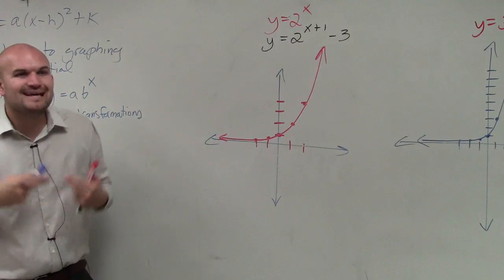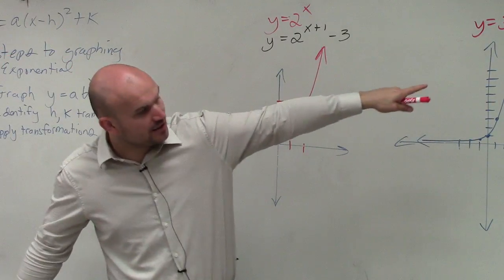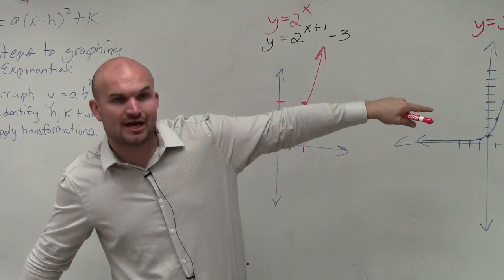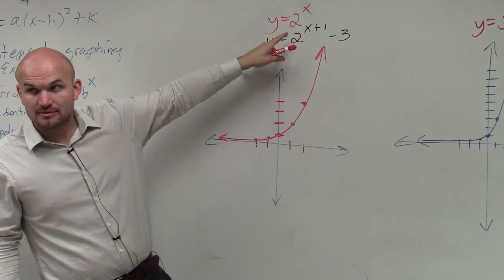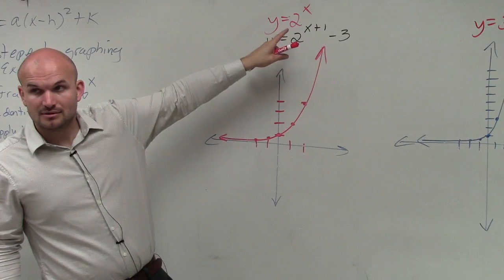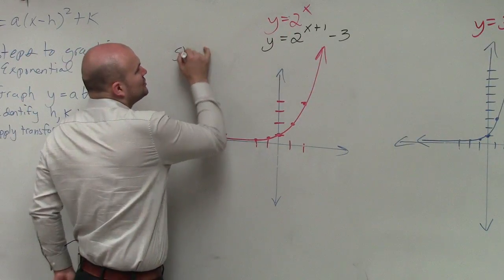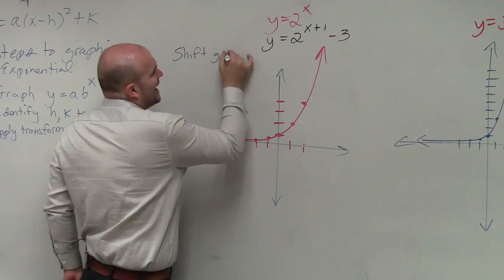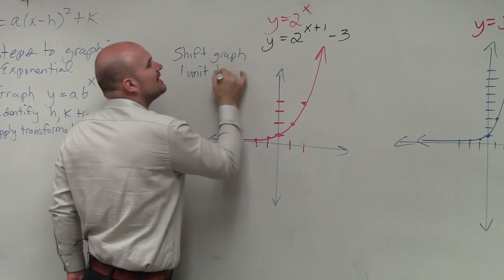Step number two is identify the transformations. If you remember from over there, we know what a, h, and k are going to do to our graph. So since I'm adding a 1 inside my function, that is going to shift my graph one unit left.